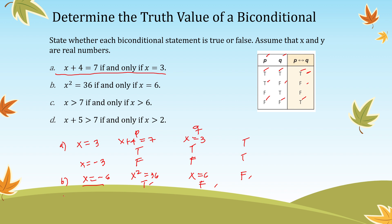For letter C: x > 7 if and only if x > 6. If we let x = 6.5, the statement x > 7 is false, but x > 6 is true. Since P is false and Q is true, the truth values differ, so this is a false biconditional statement.